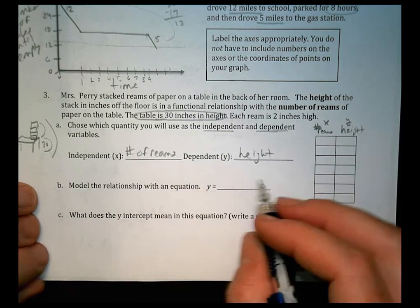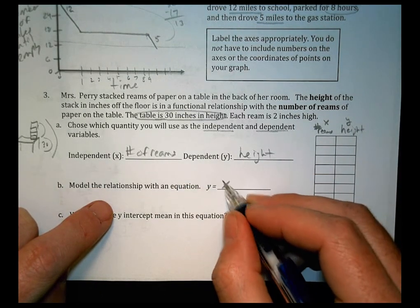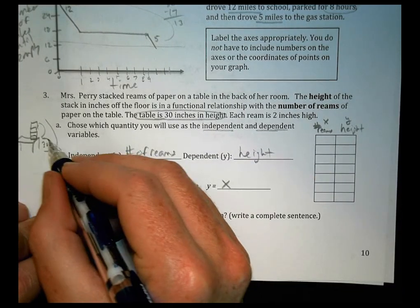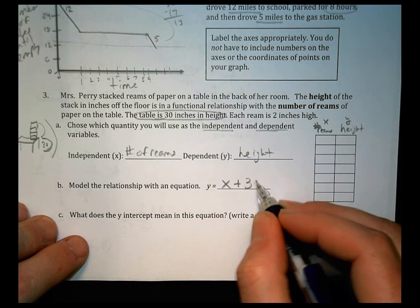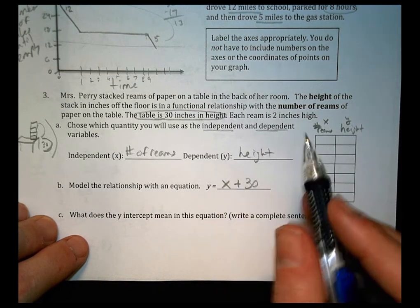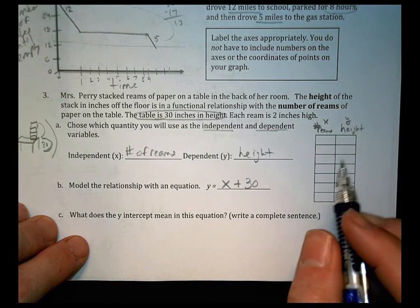So model relationship. Well, it's not just going to be y equals x. Y equals x means they're exactly the same. And the reason for that is because there's this 30 inch starting point. So I have to include that. Every time I add a ream, I have to also add that to how much I'm starting with to begin with.